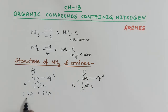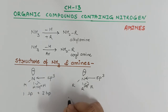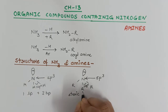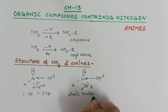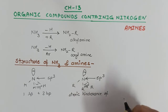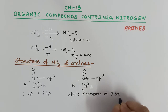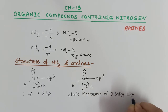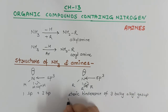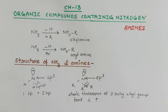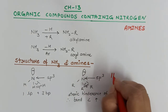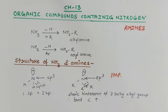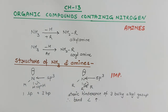The amine also contains one lone pair and three bond pairs, but the bond angle is increased because of the steric hindrance of three bulky alkyl groups. This is an important 'give reason' question: why is the bond angle in amines larger than that of ammonia, even though in both cases nitrogen is sp3 hybridized?